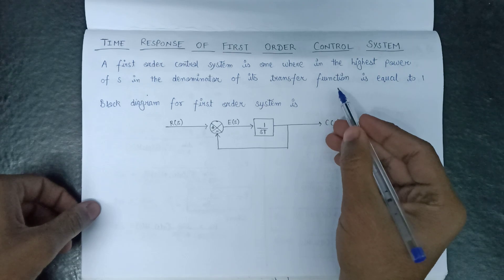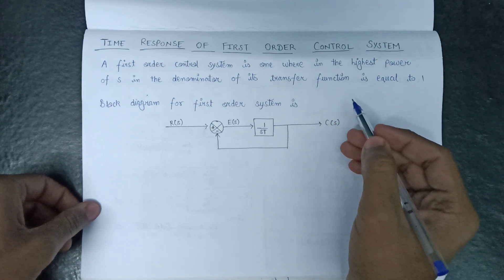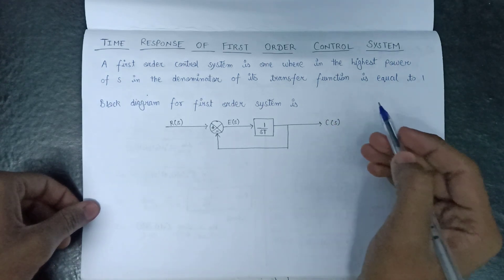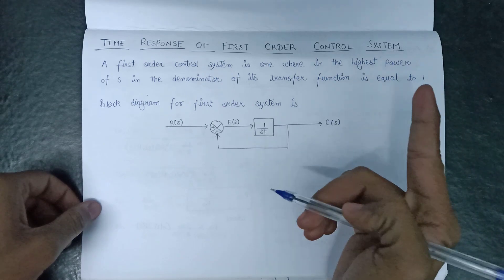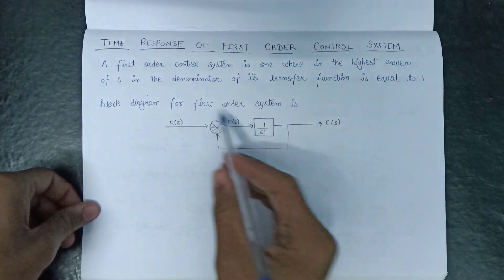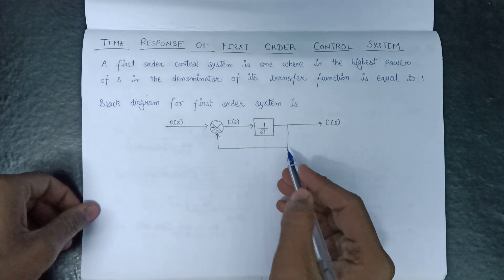If the transfer function of a control system is given, then the highest power of s in its denominator will be equals to only 1. Given the block diagram of first order control system.